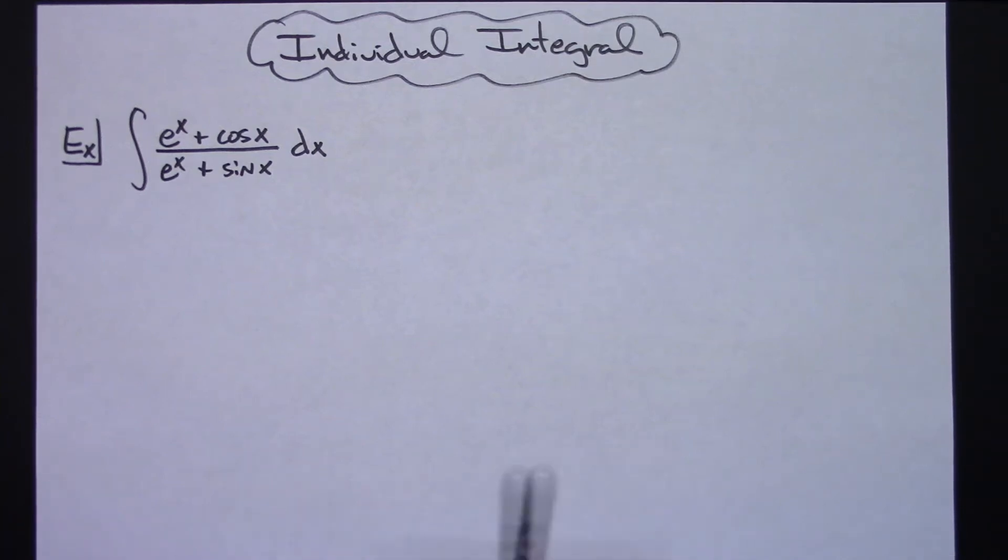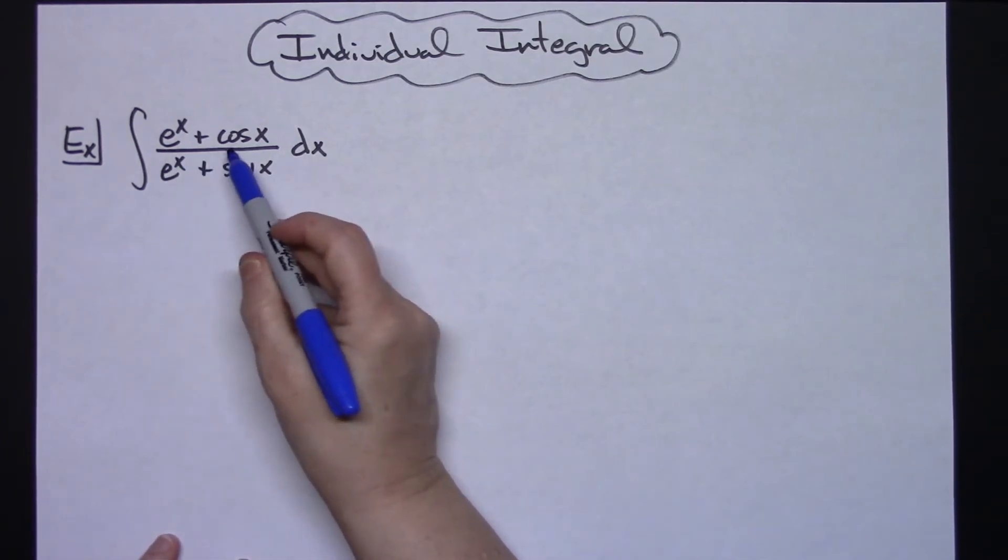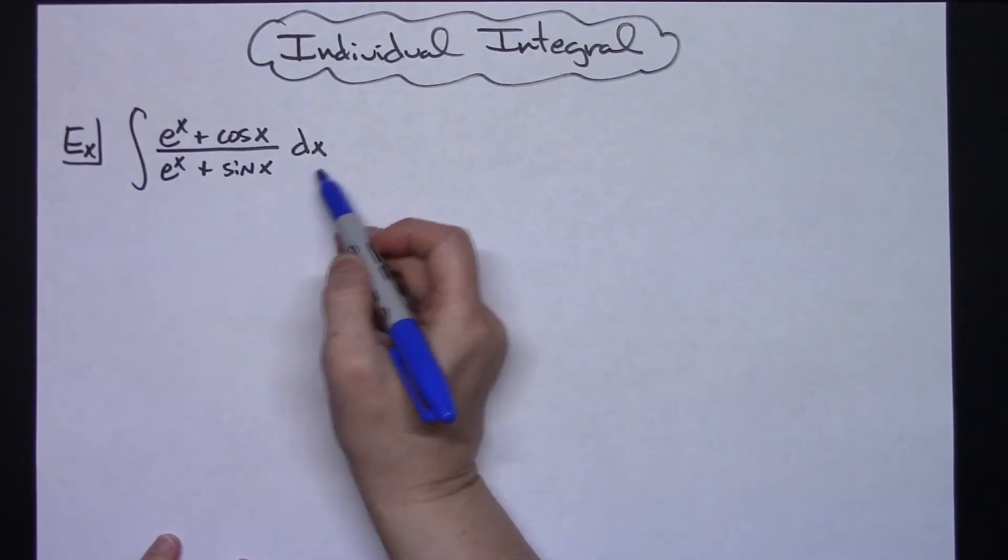In this video I'm going to work out an individual integral. We're going to take a look at the integral of e to the x plus cosine x all over e to the x plus sine x dx.